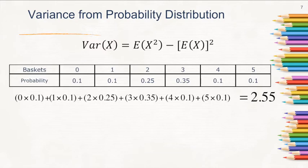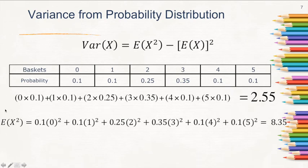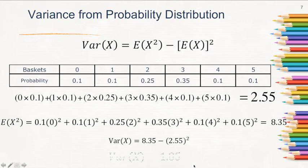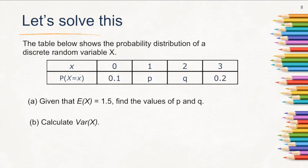Now we need E(x²): we square each x value first, then multiply by its probability and sum them all. That gives E(x²) equal to 8.35. The variance of x is therefore 8.35 minus 2.55², which also equals 1.85 — the same answer as before. Taking the square root gives the standard deviation of the discrete random variable.